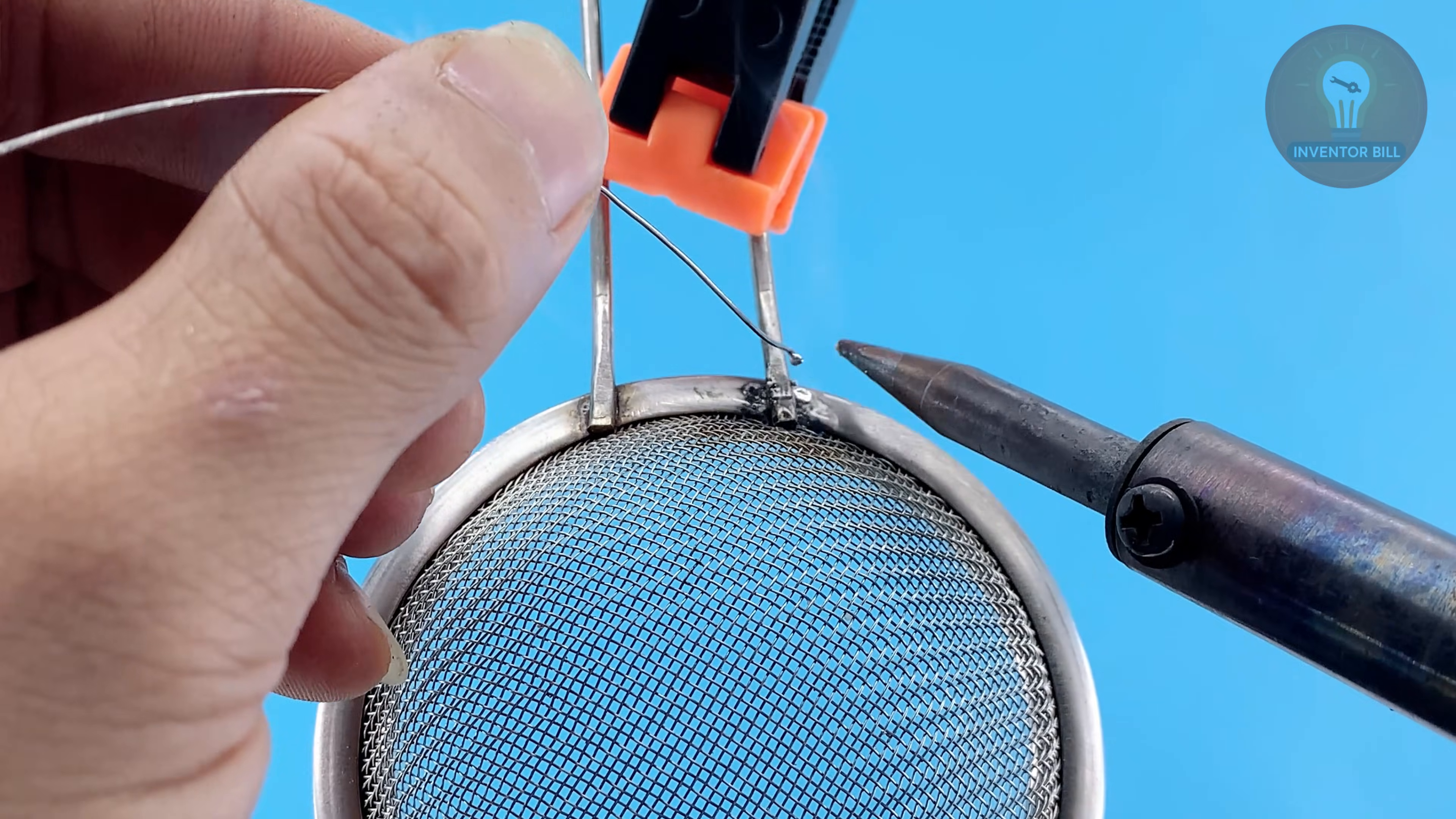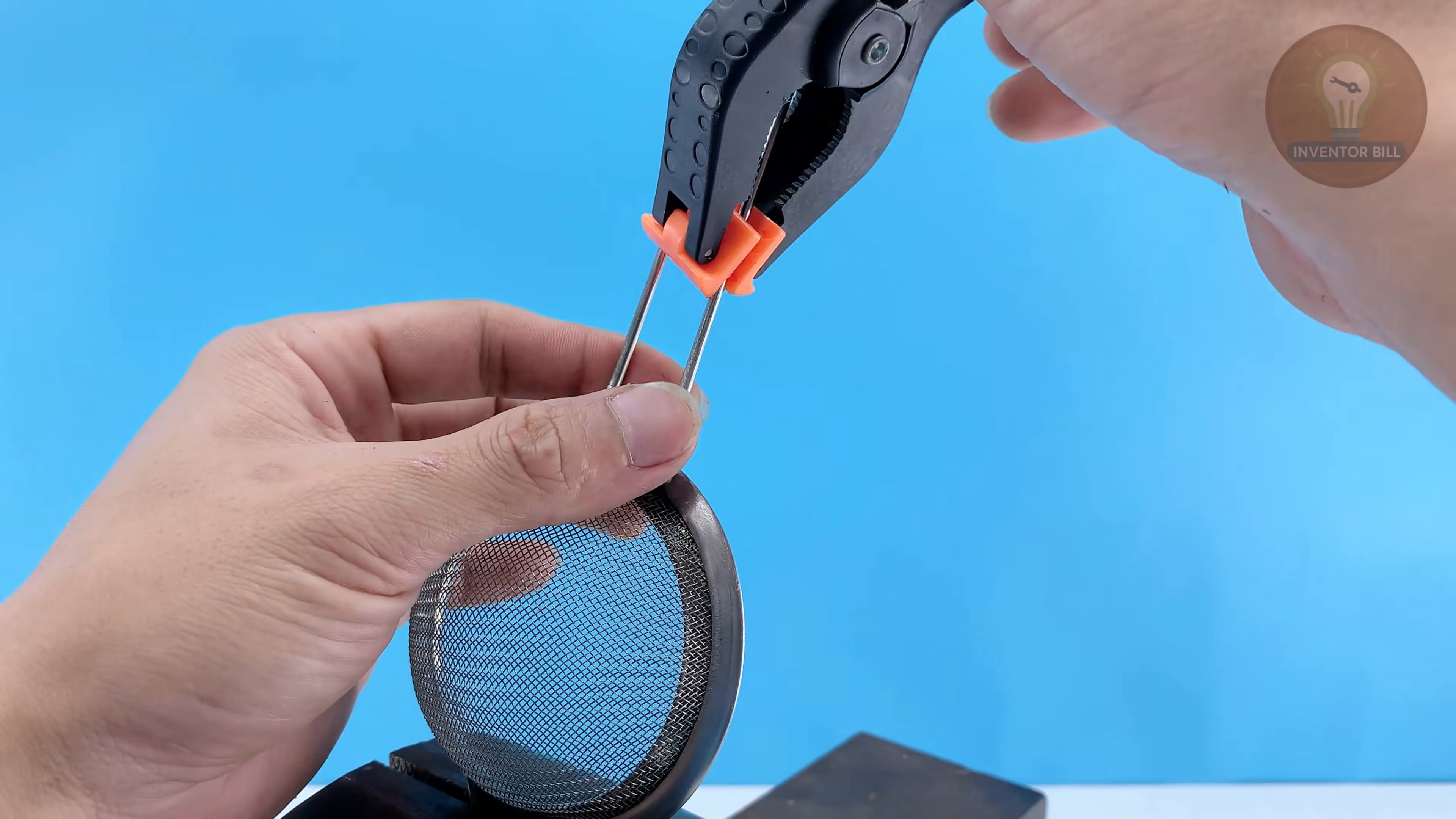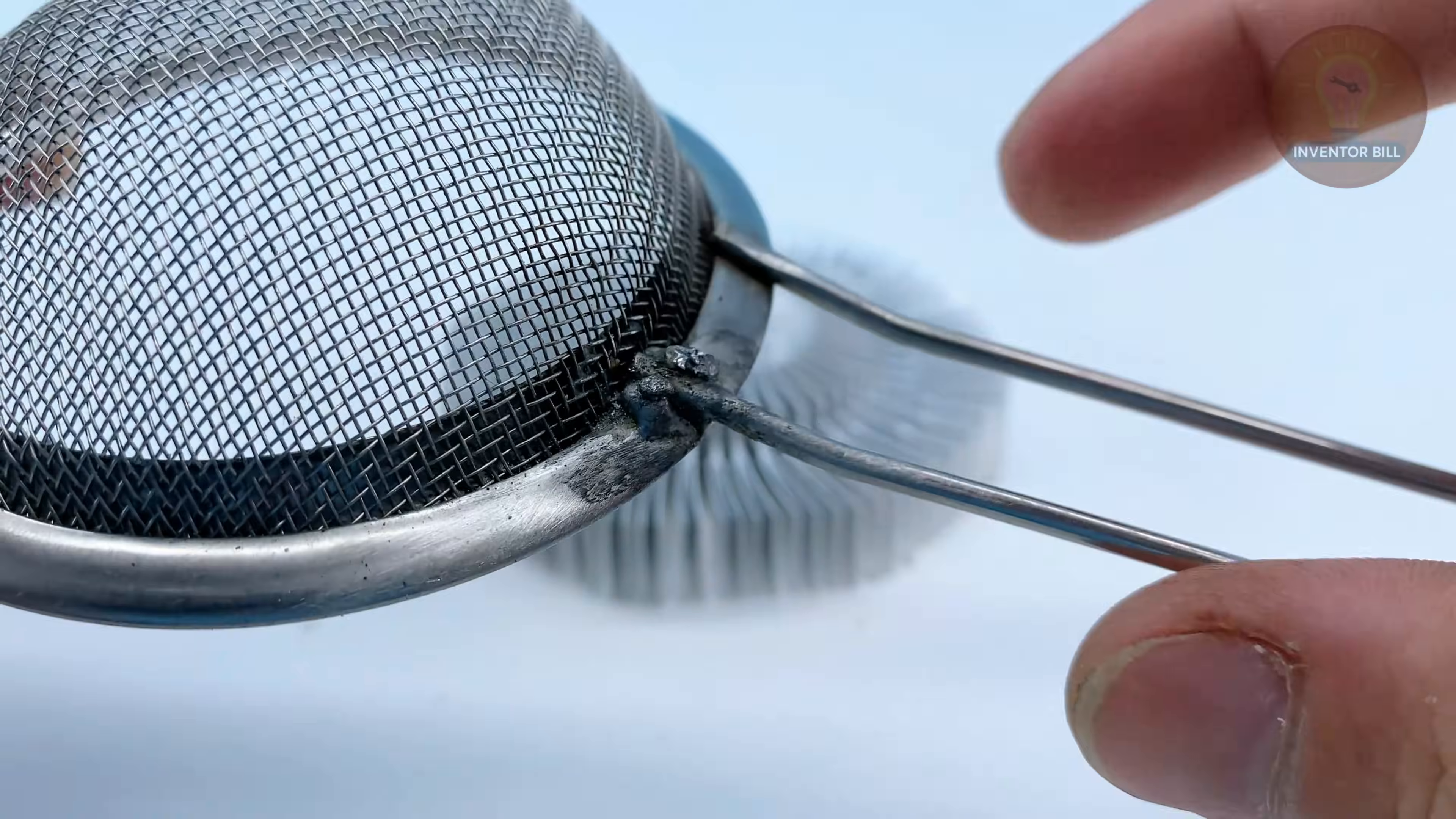And there you have it. Your soldering iron is clean, powerful, and ready to handle any job again. You've learned how to restore a worn out tip using just salt water and a simple 12 volt charger, and how to make your own natural flux from lemon and salt to solder tough metals like stainless steel. These little tricks save money, keep your tools in top shape, and make every project easier. If this guide helped you, hit the like button and share it with a friend who loves fixing things as much as you do. Don't forget to subscribe and turn on the bell so you'll never miss the next DIY idea that could save your day. Thanks for watching and I'll see you in the next video.